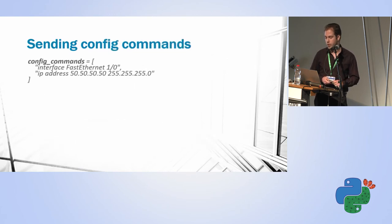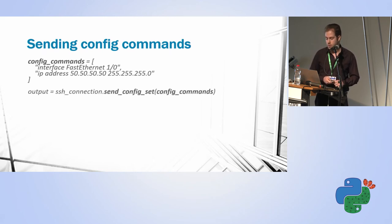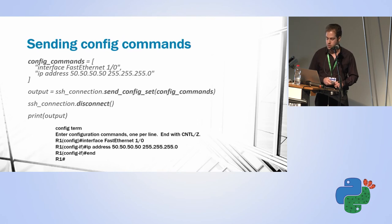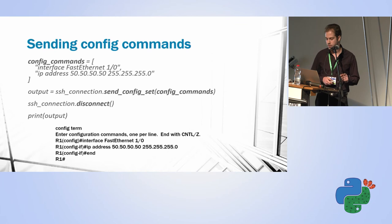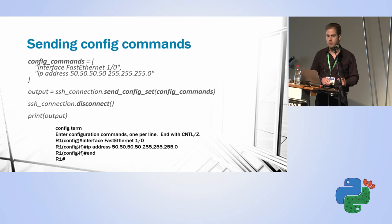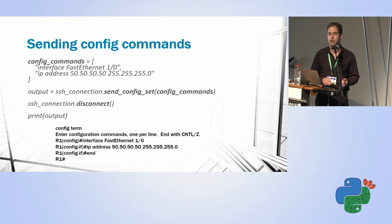For sending a configuration command — for example, sending an IP address configuration to an interface — I create the SSH connection and use send_config_set. Note that 'config term' and 'end' are commands I didn't send — NetMiko handles those automatically. NetMiko knows that to send a configuration line, it needs to enter configuration mode first.